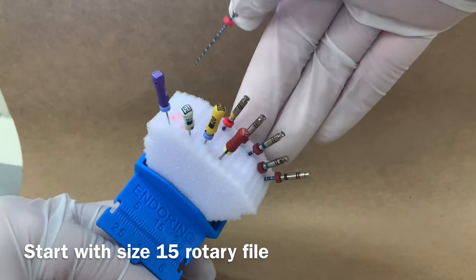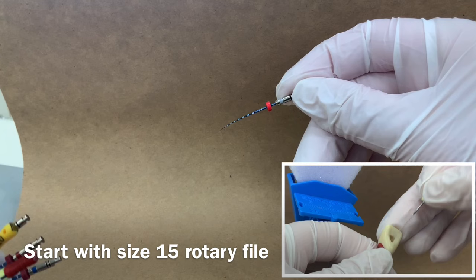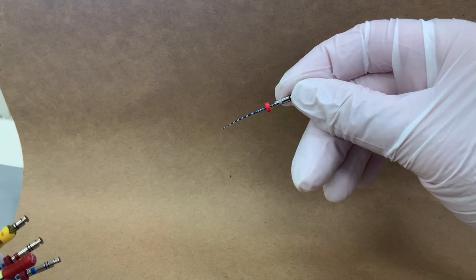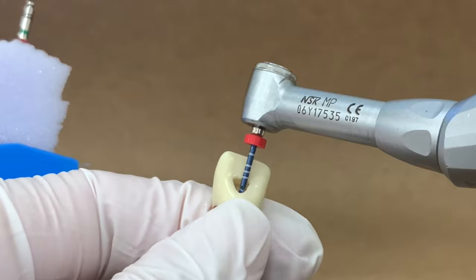Vortex Blue comes in packs of size 15 to 40. Start with a size 15 even though we have already hand filed to size 25. Doing so will allow us to safely negotiate the canal. This file should fit very passively with minimal resistance.